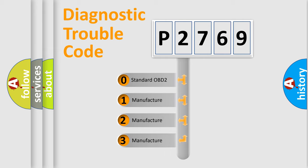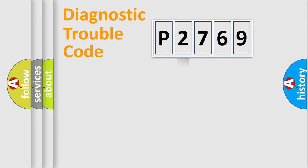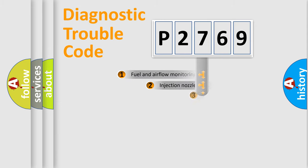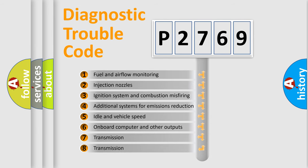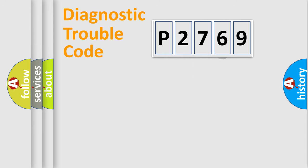If the second character is expressed as zero, it is a standardized error. In the case of numbers 1, 2, 3, it is a car-specific error. The third character specifies a subset of errors. The distribution shown is valid only for the standardized DTC code.